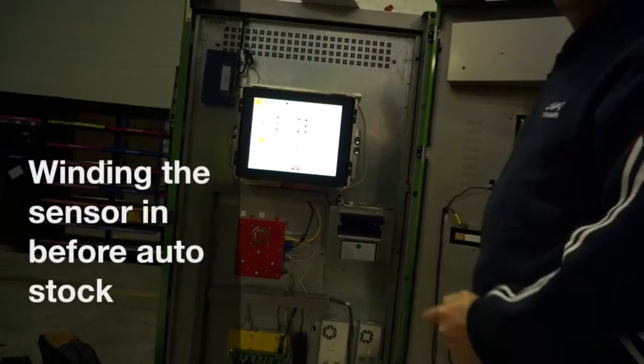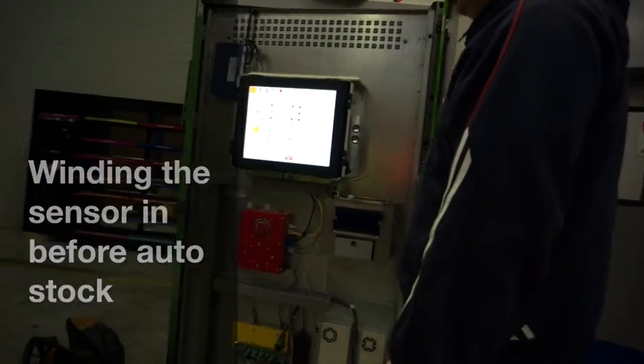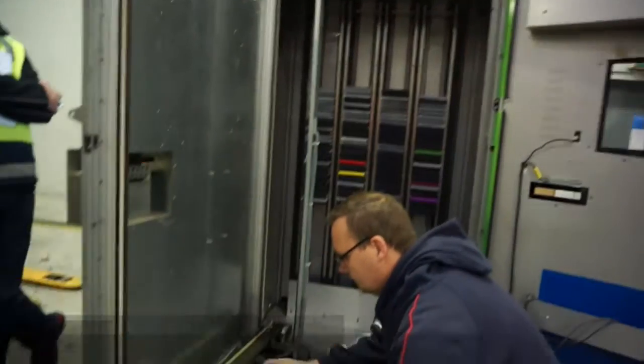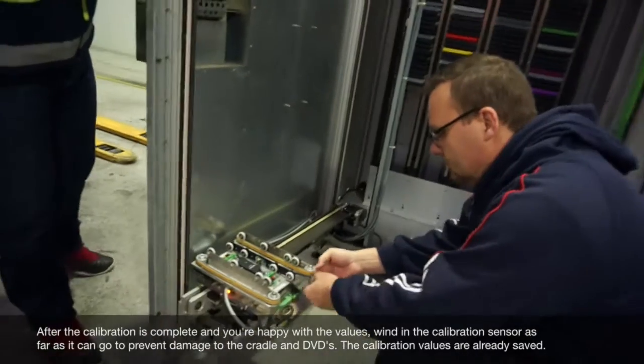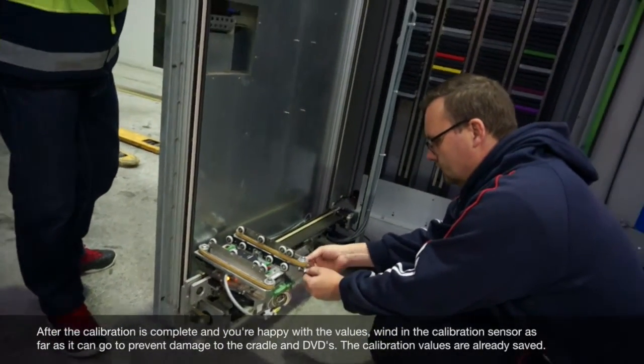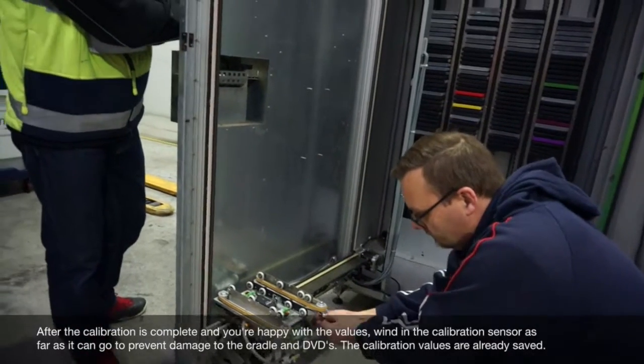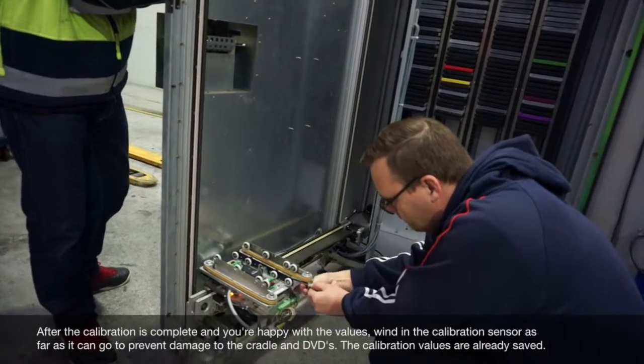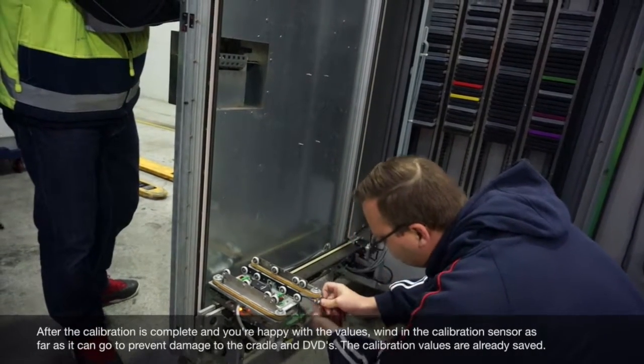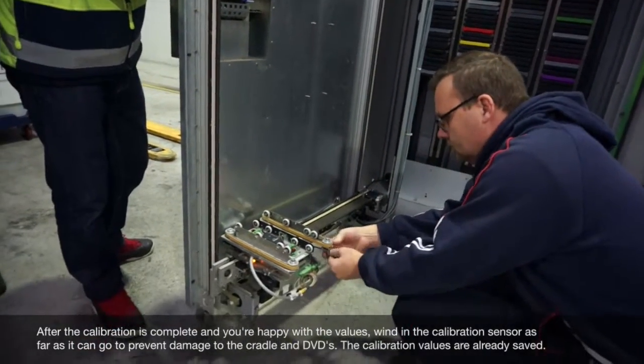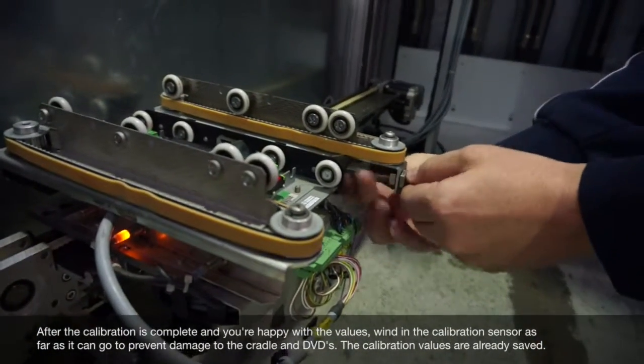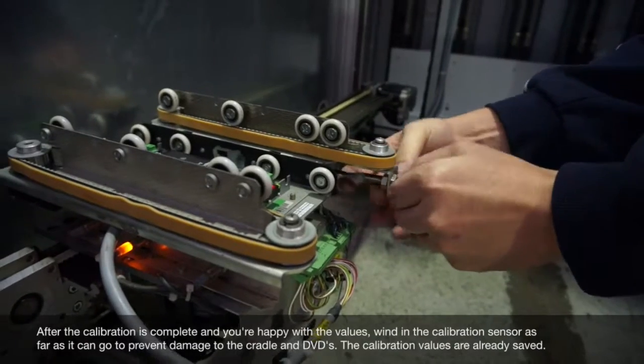Once it's calibrated, there's no need to, so after you've done the calibration, wind in the sensor and then go through your auto-stock process. Because it's already saved those calibration values. Do you take it right in? Yeah, as far as I possibly can. Okay, as far as it'll go.